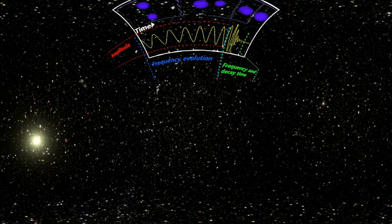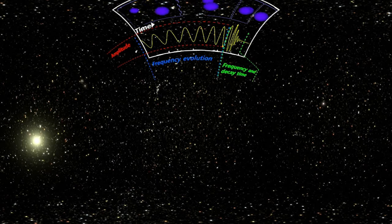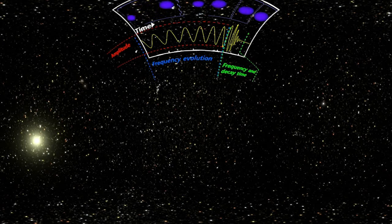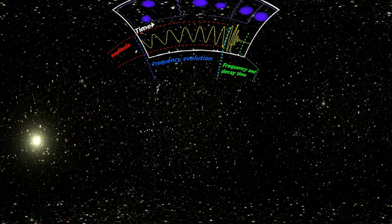There's another really interesting thing that we found. Remember, we could tell the mass of the final black hole? Well, it turns out that the mass of the final black hole was less than the mass of the two original black holes by about three solar masses.